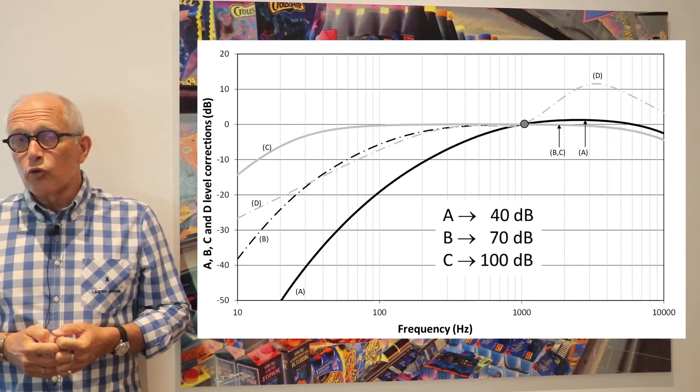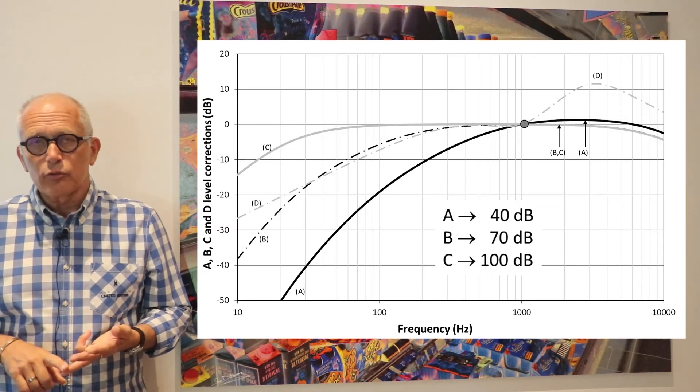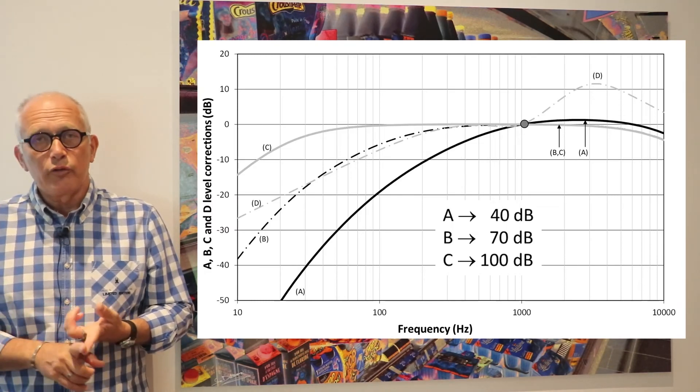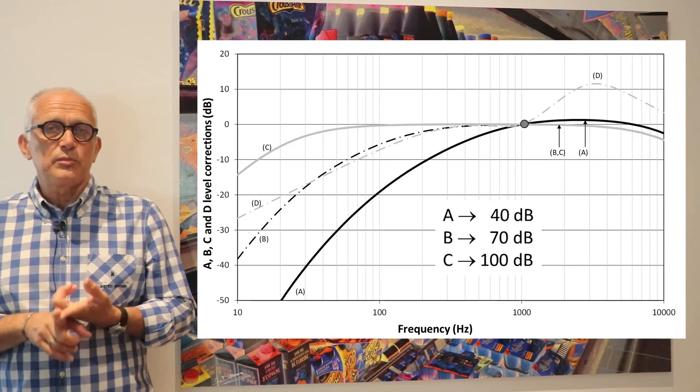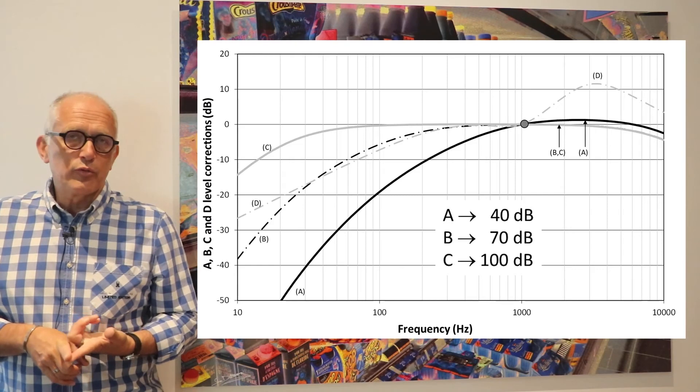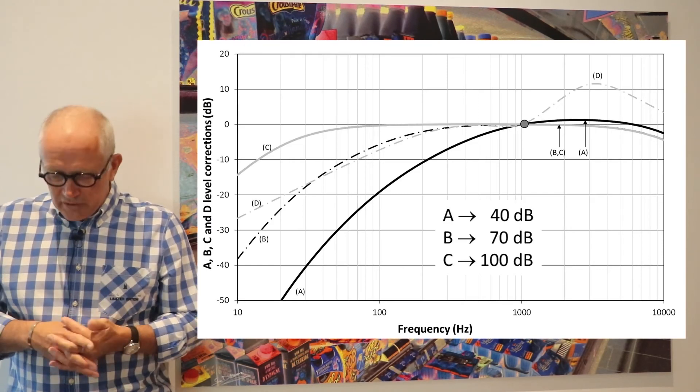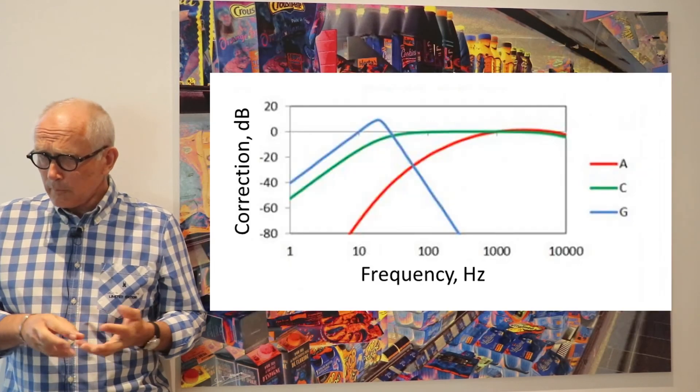Note that there are also other filters like the D filter, the U filter, the G filter. Just a word about them. The D filter was originally designed specifically for aircraft noise, but is now fully replaced by the EPNDB scale, which I'm not going to detail in this course.